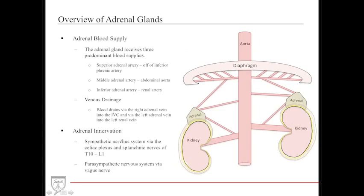The adrenal glands receive three adrenal arteries: the superior adrenal artery from the inferior phrenic artery (the first branch of the abdominal aorta), the middle adrenal artery directly from the abdominal aorta, and the inferior adrenal artery from the renal arteries. Venous drainage is via the right adrenal vein into the IVC and the left adrenal vein into the left renal vein. Innervation is similar to the kidneys — sympathetic input via the celiac plexus and splanchnic nerves, and parasympathetic input from the vagus nerve.